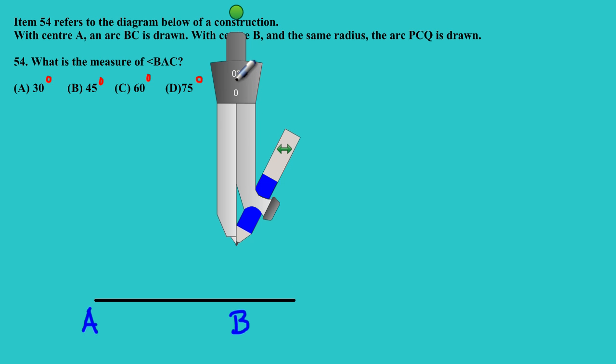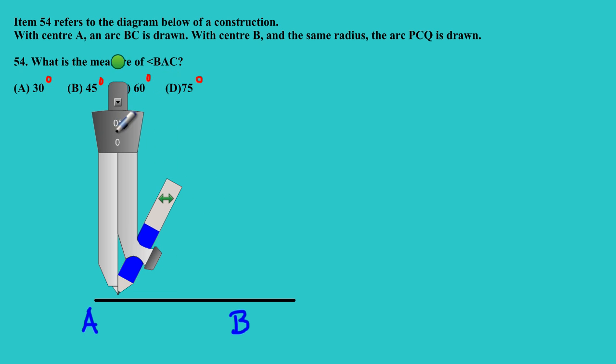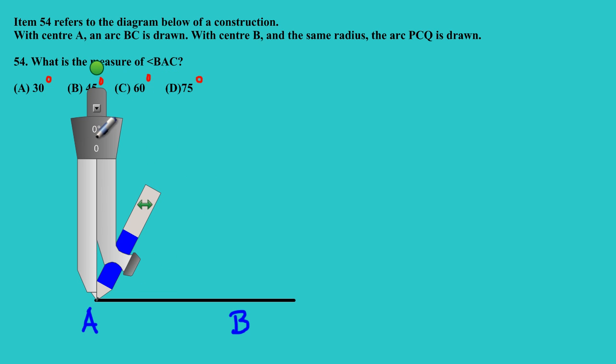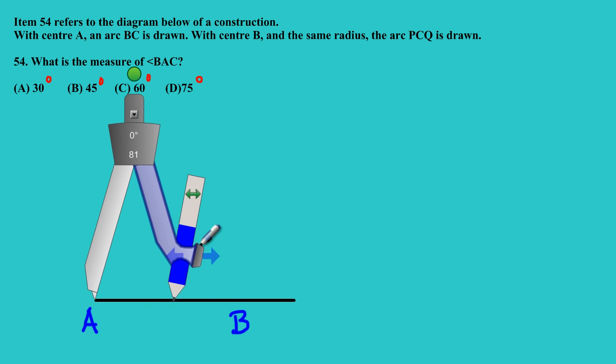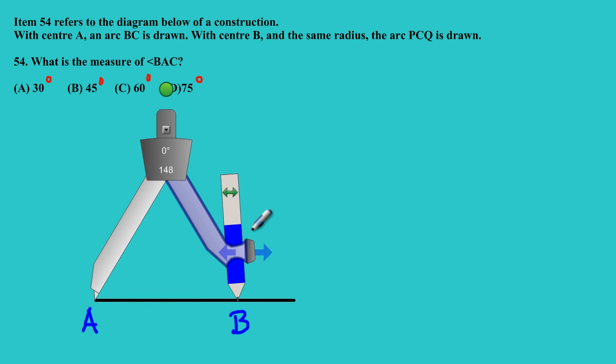Obviously, on my line segment, this would be my point A, and this would be my point B, based on the diagram that they gave to us. Now basically what I'm going to be doing: I'm going to take out my compass.